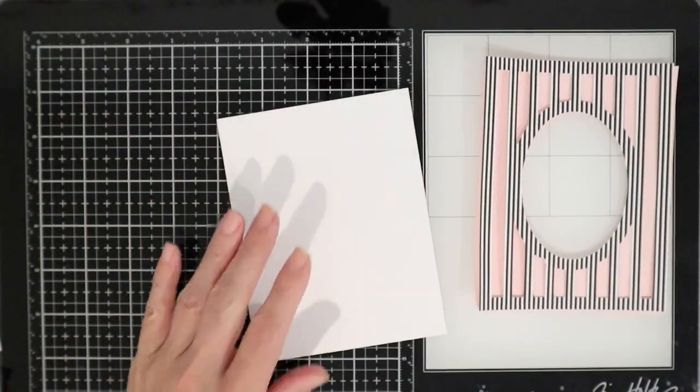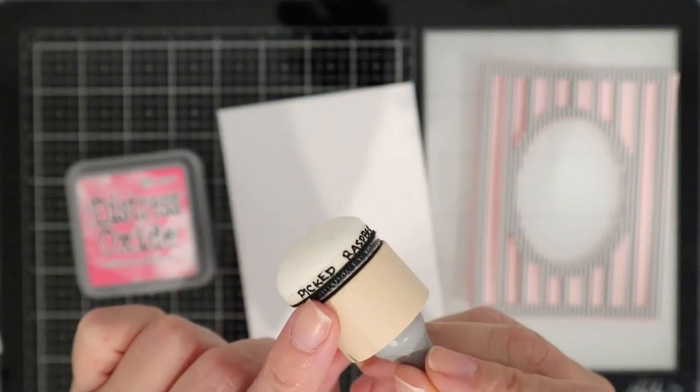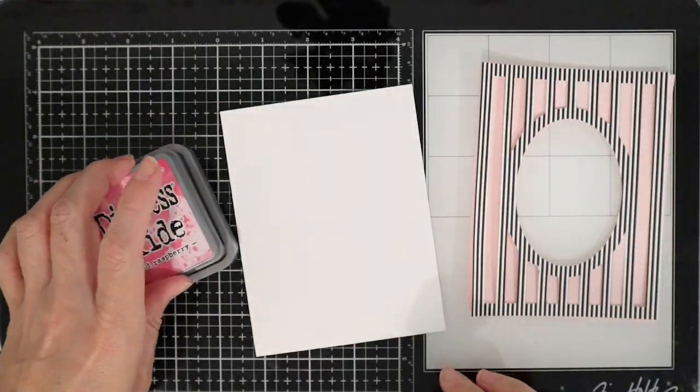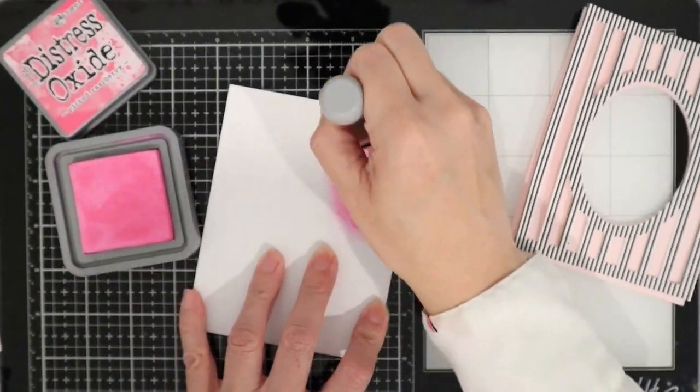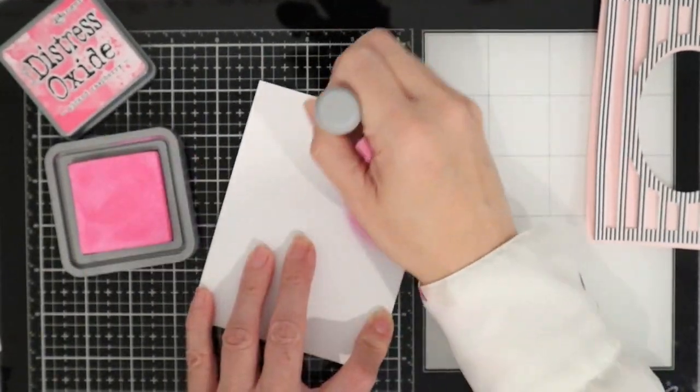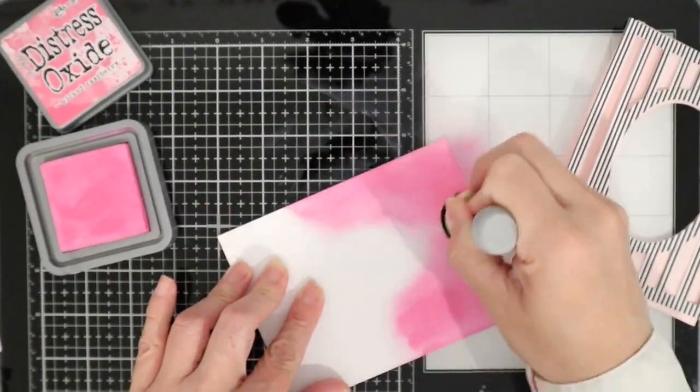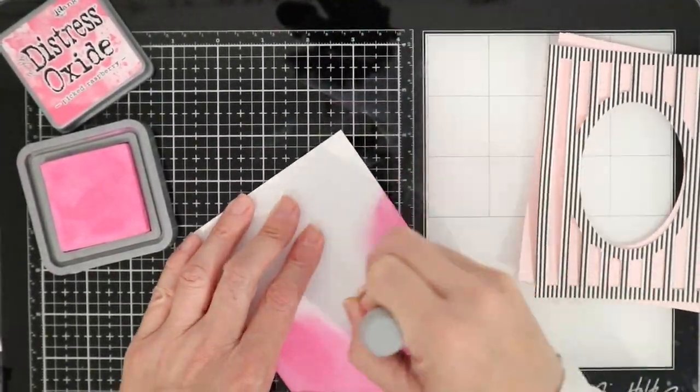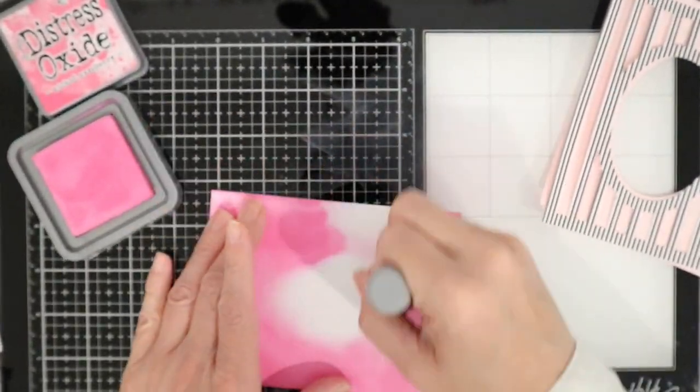Now I'm gonna go ahead and bring some color into this so that it peeks out through the back. I'm using Picked Raspberries for this, and as you can see my dauber, I actually like these daubers because I can write on them and I know what color I'm using. You're gonna see me go back and forth placing the frame over my coloring just to make sure I get enough of that color peeking through.